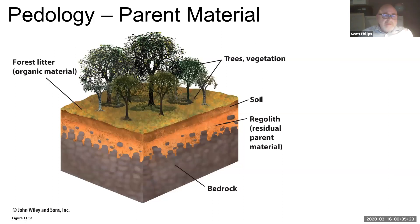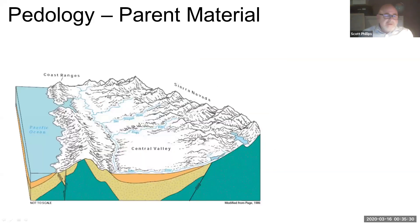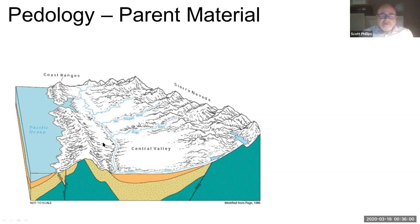Where your parent material comes from — the rock portion of your soil — can make a difference as well. For example, here in California's Central Valley, we have the Sierra Nevada mountain range on one side and the coast ranges on the other. Each is made of different types of rock material: more granite in the Sierra Nevada, more sedimentary type rocks in the coastal range. So the parent material on one side of the valley comes more from the Sierra Nevada, and on the other side it's influenced more by the material from the coast ranges. The soils on the west side of the valley have different parent material than soils on the east side.